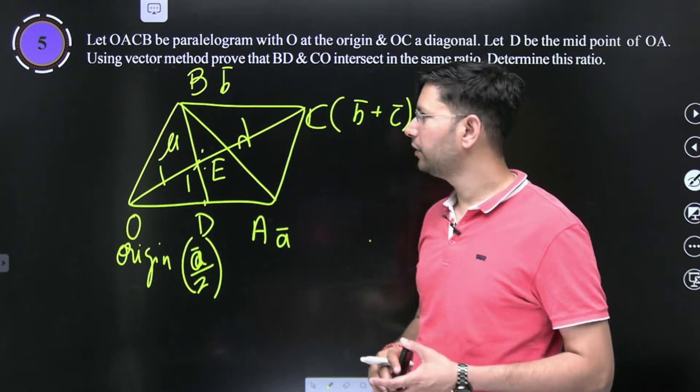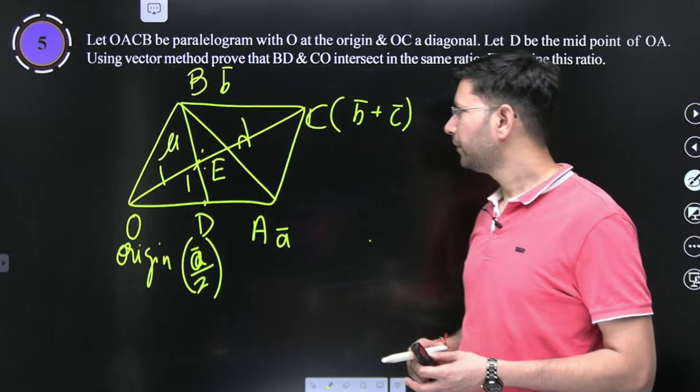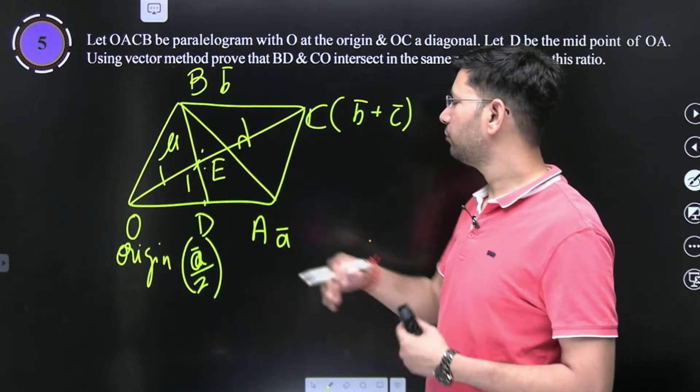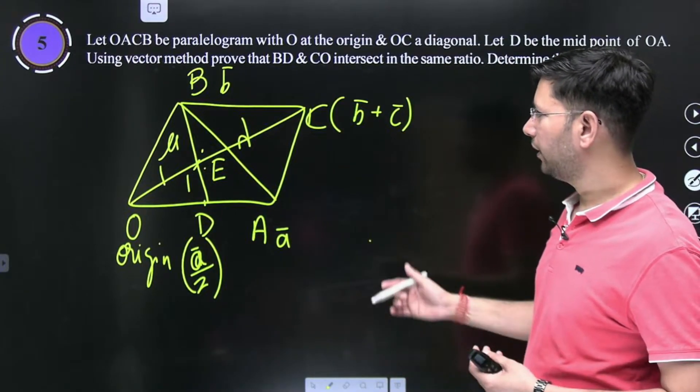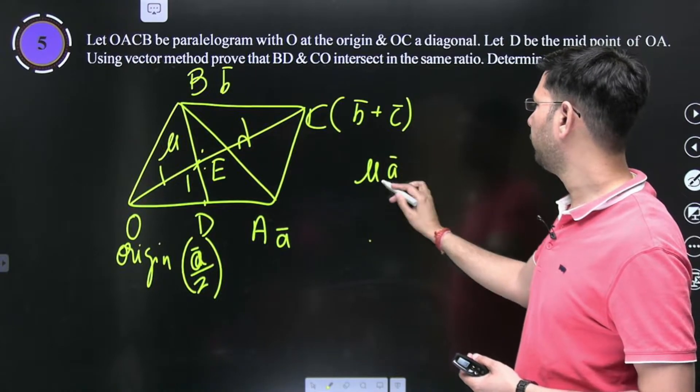E divides BD internally in the ratio mu is to 1. Mu is to 1 from here and here from 1 to lambda. So if we want to do something, mu is to A by 2.